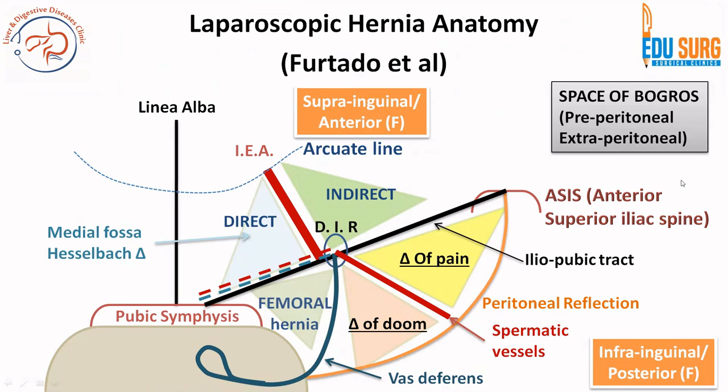If you have not seen the video on laparoscopic hernia anatomy, open inguinal hernia anatomy, and the anatomy of the inguinal canal, you may find this video difficult. It's important that you understand the anatomy: the pubic symphysis, the pubic tubercle, the mid-inguinal point, and the midpoint of the inguinal ligament. Medial to this is the direct inguinal hernia or Hesselbach's triangle, and lateral to the inferior epigastric artery pulsation is the indirect hernia.